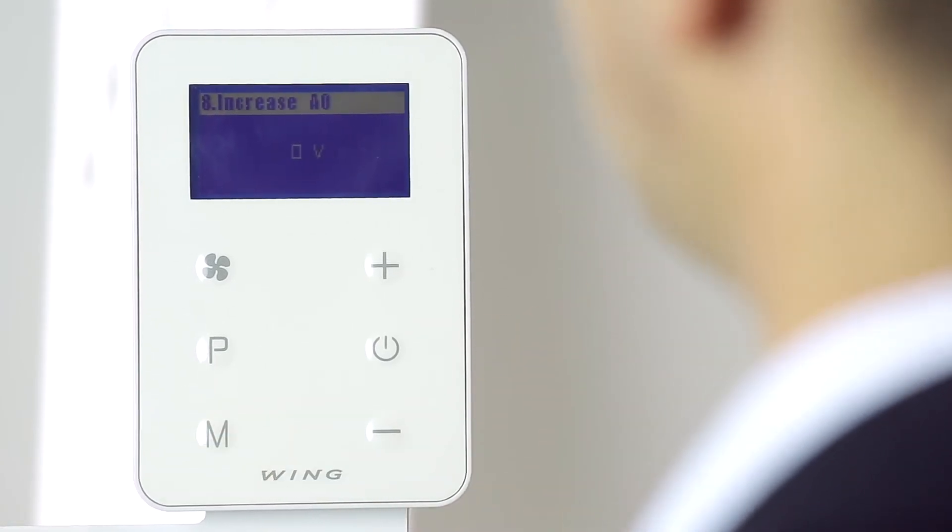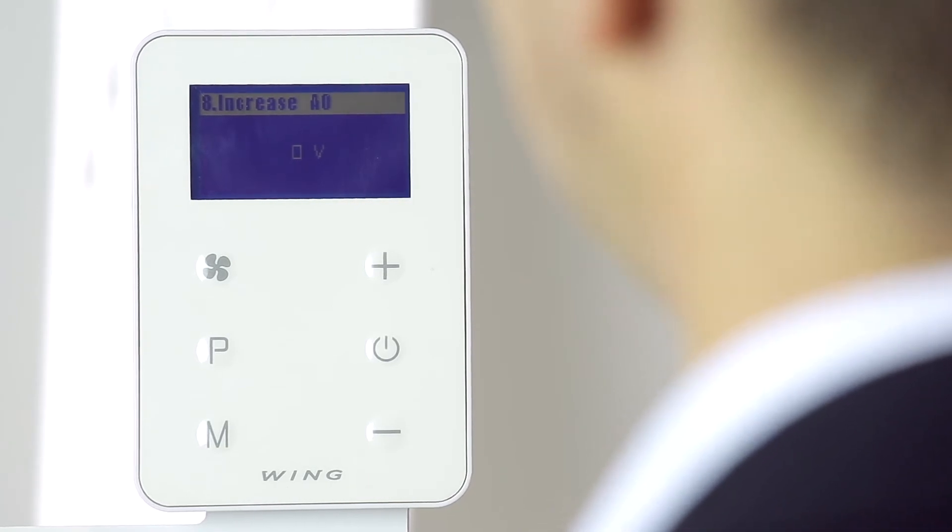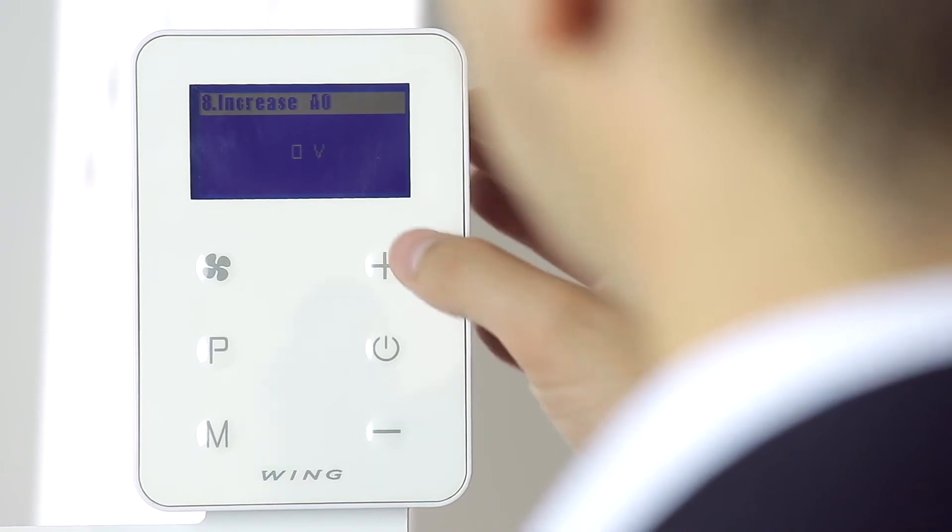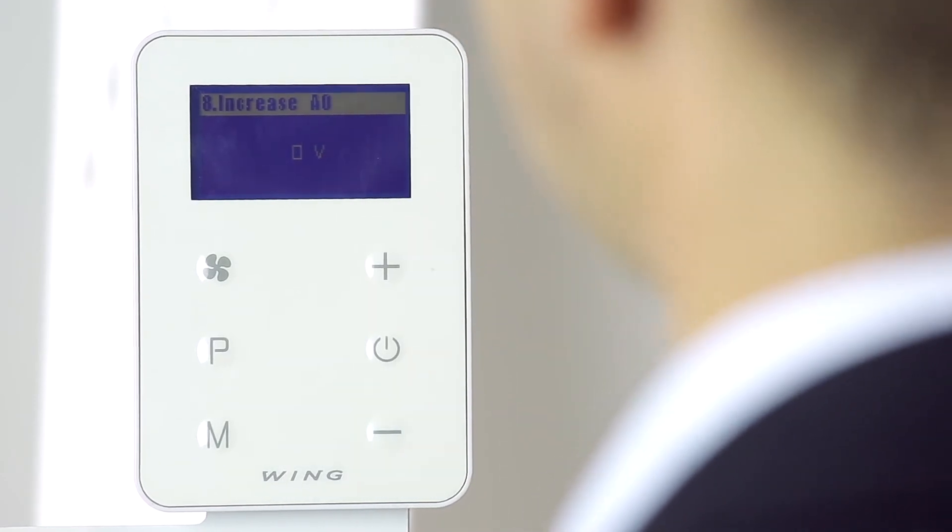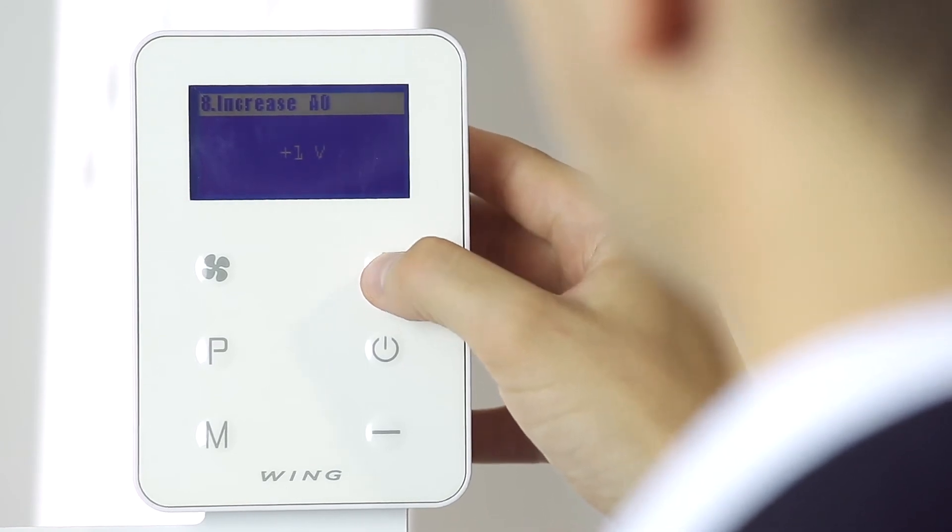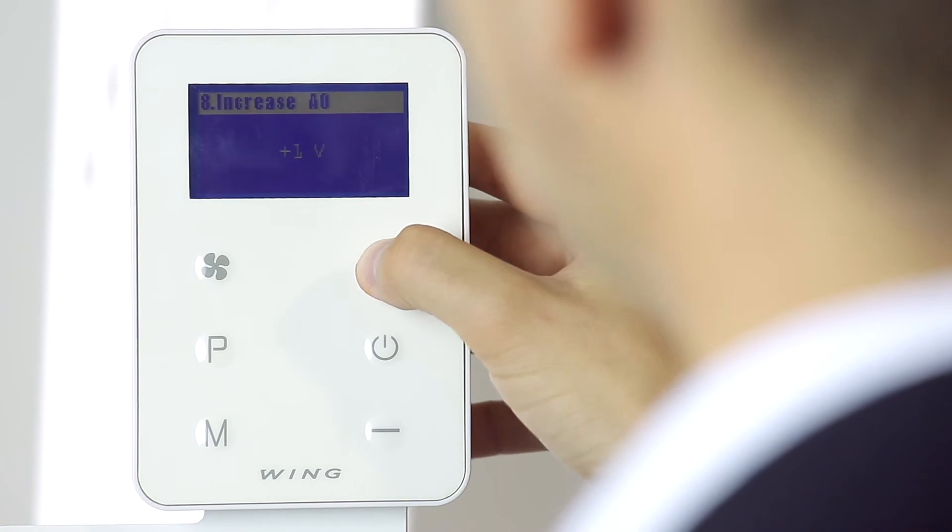Setting number eight is the modulation increase of the output signal. In the same way as with the Volcano controller for large area objects, we can increase the output signal by plus one, plus two, plus three, or plus four volts.